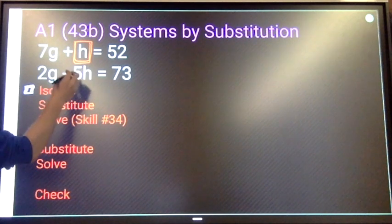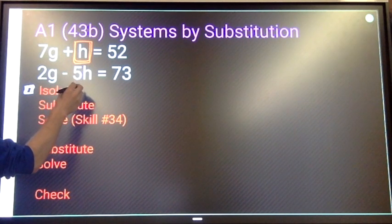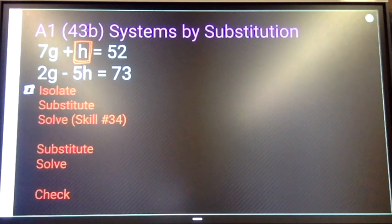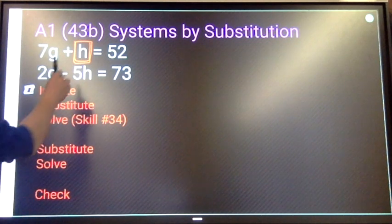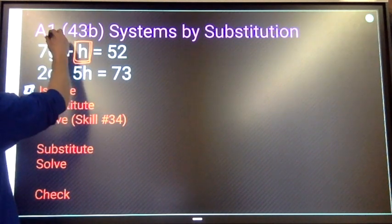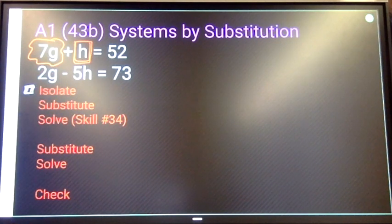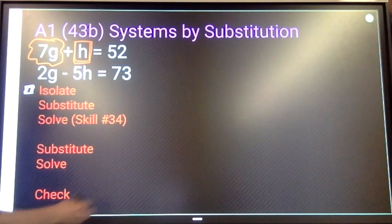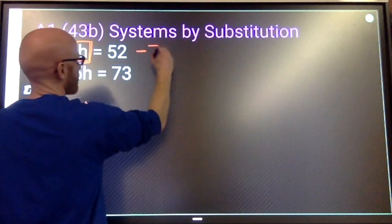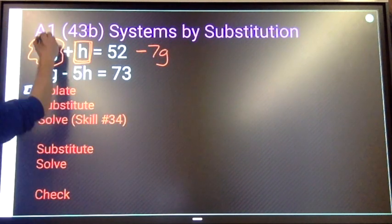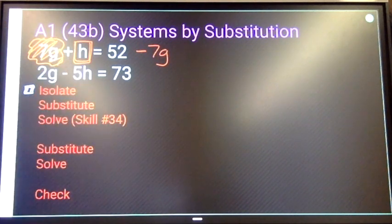Let me show both ways. If I want to get h by itself, I need to get rid of 7g's. How do I do that? Subtract 7g from both sides. So minus 7g minus 7g over here will disappear. We would have h equals 52 minus 7g, and then you could do what we did in the last part A from that point.